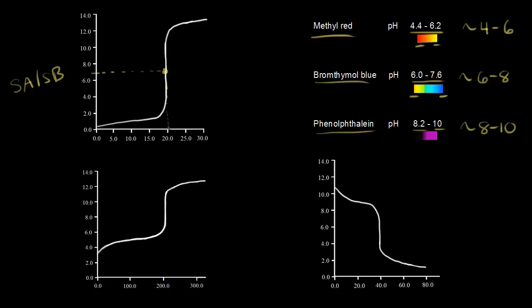So we drop down here. For the example that we did, we did the math — it took 20 milliliters of our strong base to reach the equivalence point. So if you're doing a titration of a strong acid with a strong base, the pH is equal to 7 at the equivalence point.